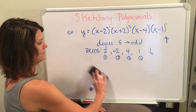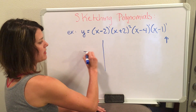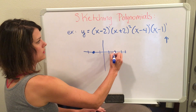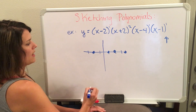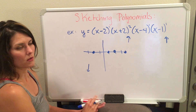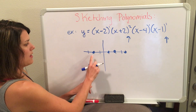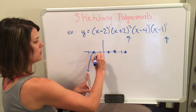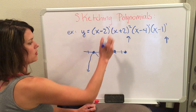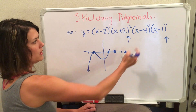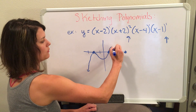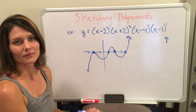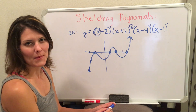Now I'm ready to graph. I always start by graphing my zeros first: negative 2, 1, 2, and 4. Then I put my end behavior arrows in to make sure I'm going in the right direction. Starting from the left end going towards negative 2, it has a multiplicity of 2, so I bounce back up off that zero. Heading towards 2, it has a multiplicity of 1, so I go straight through. 1 and 4 also have multiplicities of 1, so I go straight through them as well, then end going up towards positive infinity. This sketch is done. Thank you for watching Higher Math Solutions — see you next time.